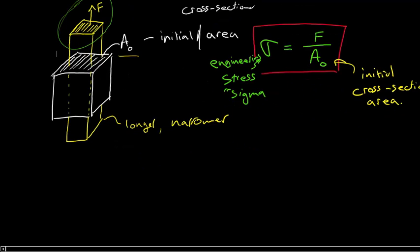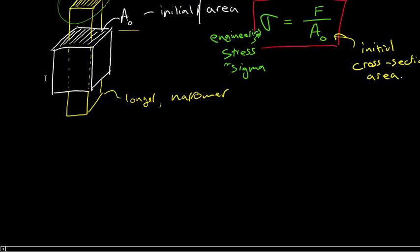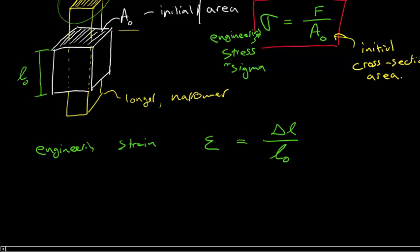Similarly, we can define the engineering strain, the Greek letter epsilon, as the changing length over the initial length. So this would be the initial length. And then there's this little elongation here at the bottom, and this elongation at the top.